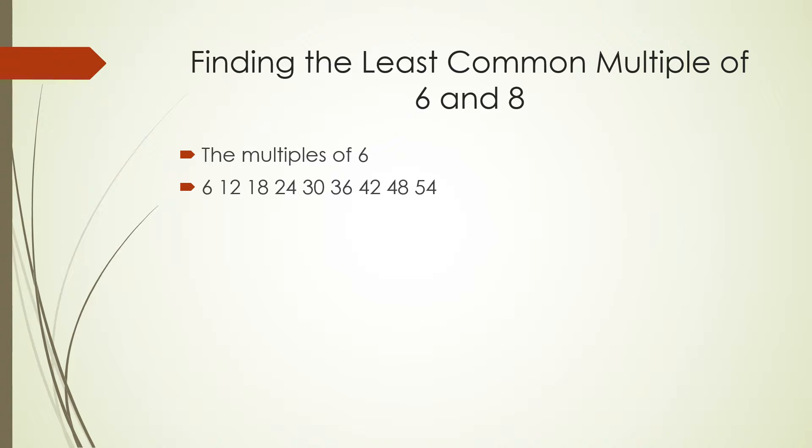These are the multiples of 6 up to about 54. And these are the multiples of 8 up to 64. Now, if you compare this row and this row, you will notice that 48 is in both of them. That's a common multiple. Is it the least common multiple? No. You can do better because there's a 24 there and a 24 there. Excuse me. The least common multiple is 24.